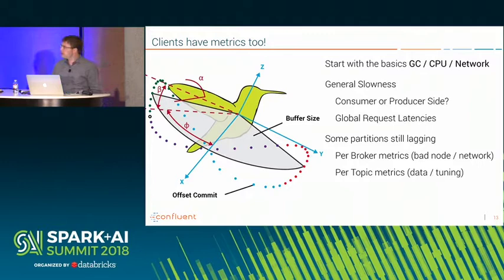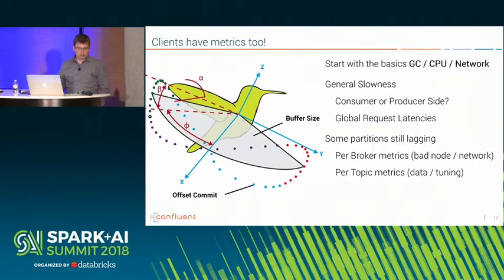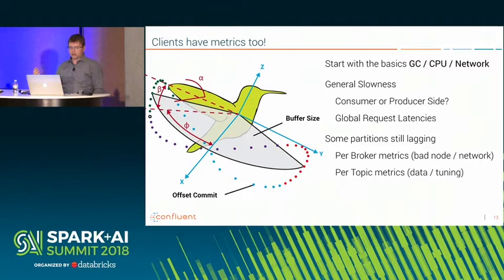A lot of people forget that Kafka clients actually expose metrics as well. They're exposed through JMX metrics — not the prettiest format, but it works and is common enough for people to ingest. The first thing to look at on the client side to rule out problems is basic GC, CPU, and network usage. Once you've ruled out the basics, that's when you want to look deeper into the actual Kafka client metrics.